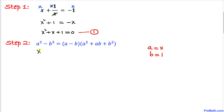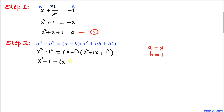Replacing a by x and b by 1, this equation becomes x cubed minus 1 cubed equals x minus 1 times x squared plus x times 1 plus 1 squared. Simplifying: x cubed minus 1 equals x minus 1 times x squared plus x plus 1.